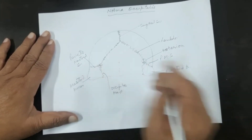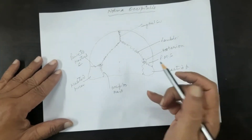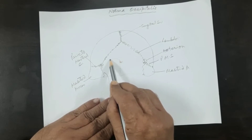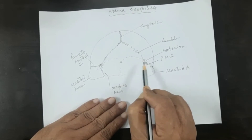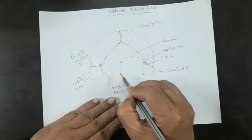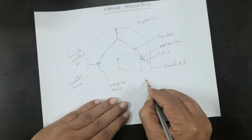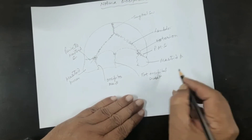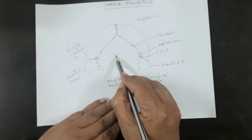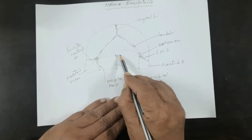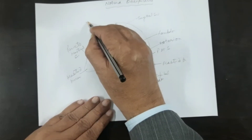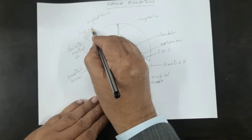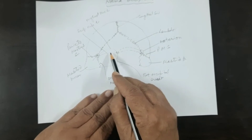This is the external occipital protuberance, and from it an arched line going towards the mastoid process is the highest nuchal line. This is the external occipital crest going right up to the foramen magnum. Another line going from the external occipital protuberance is the superior nuchal line. The superior nuchal line is considered to be the junction between the head and the neck.